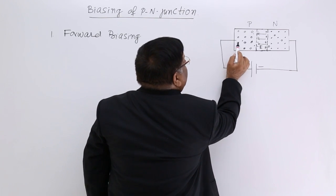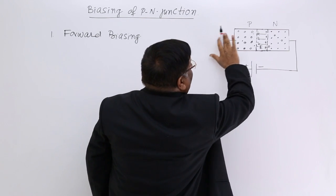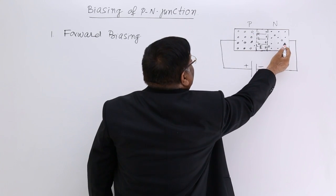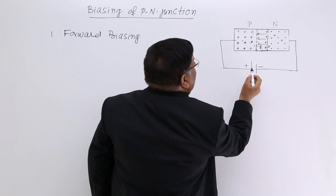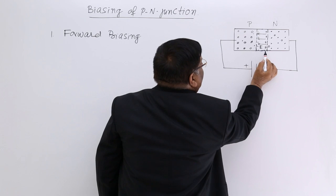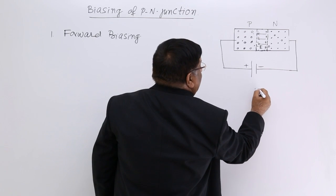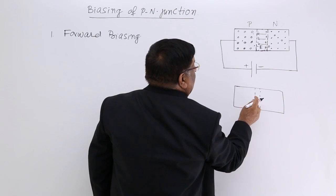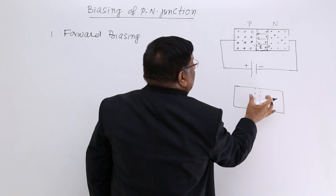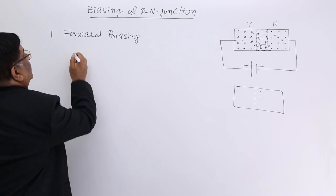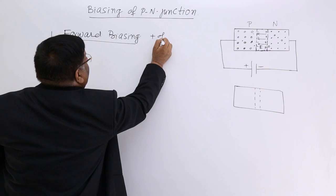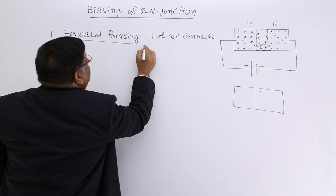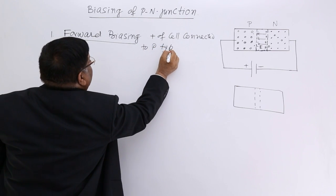The positive terminal repels the holes in P-type, and there is a pressure from the negative terminal on the N-type. As a result, this layer moves here and that layer moves here, so we get a new, narrower depletion layer. In forward biasing, the plus of the cell is connected to the P-type semiconductor and minus to the N-type semiconductor.